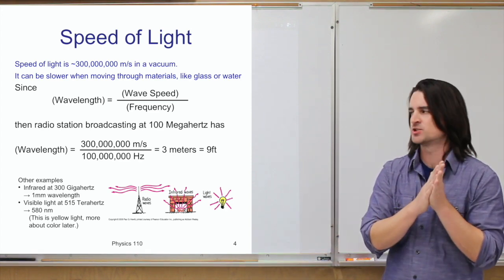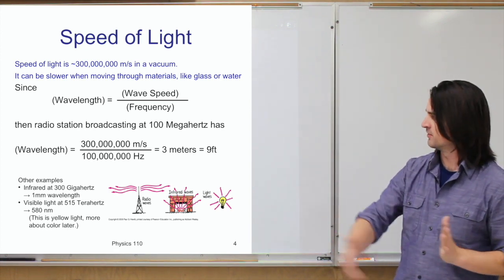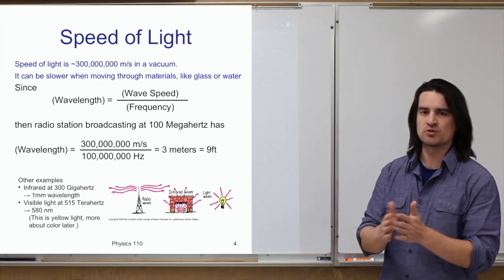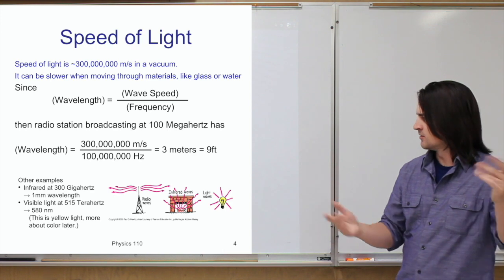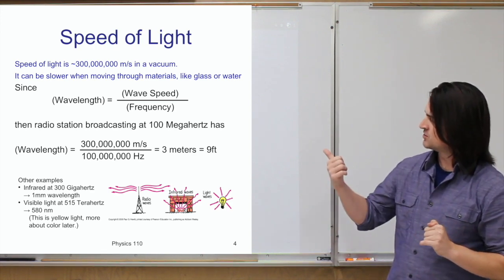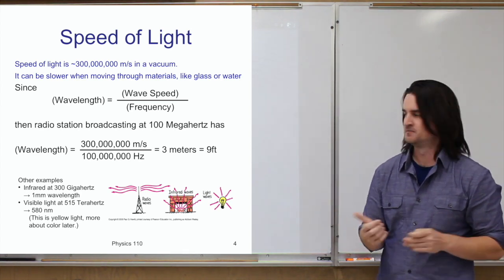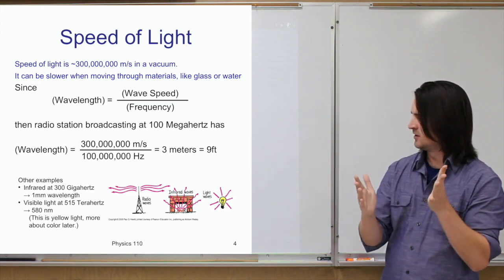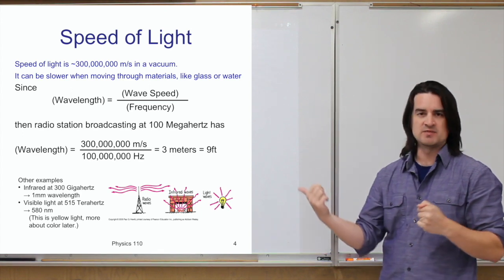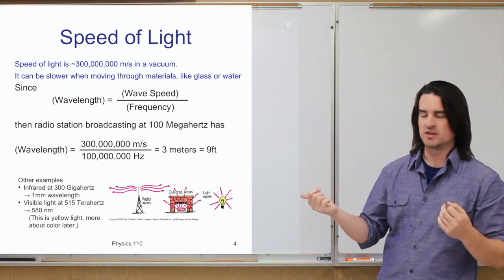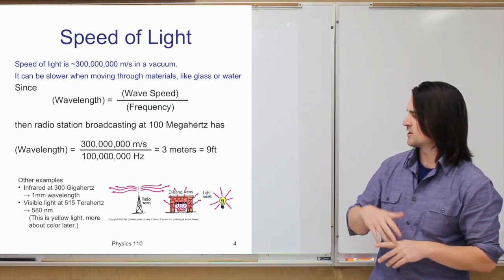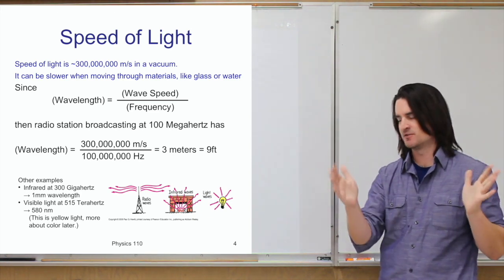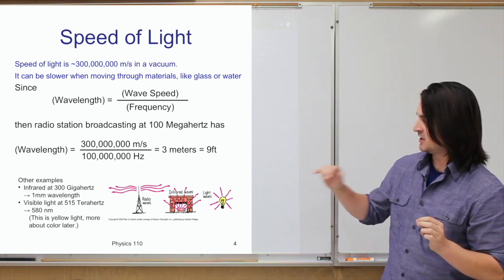Visible light has very short wavelengths, while radio waves have pretty long wavelengths. Another example: infrared light at 300 gigahertz has a wavelength of about a millimeter. One type of visible light at 515 terahertz — that's 515 trillion hertz — has a wavelength of about 580 nanometers. Since the visible spectrum is between about 400 and 700 nanometers, that visible light at roughly 580 nanometers corresponds to yellow light.